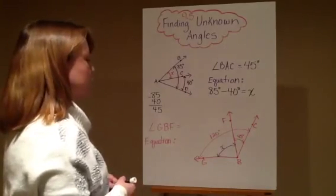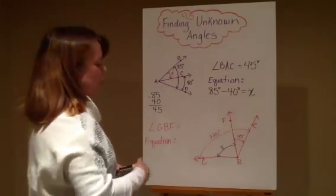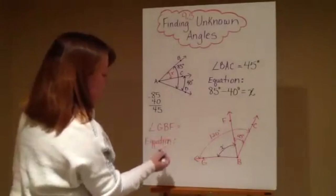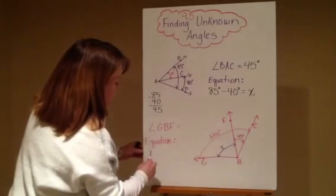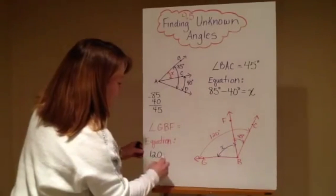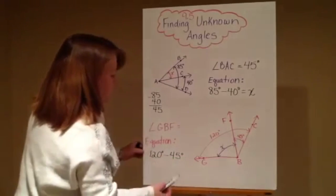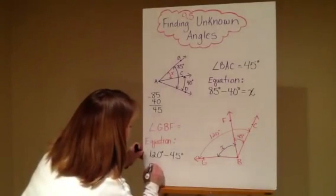So what we're going to do is we're going to take the numbers that we have. We have 120 and we have 45. We're going to make an equation. So I can take 120 minus 45 and put my degree signs in there and do that off to the side here.